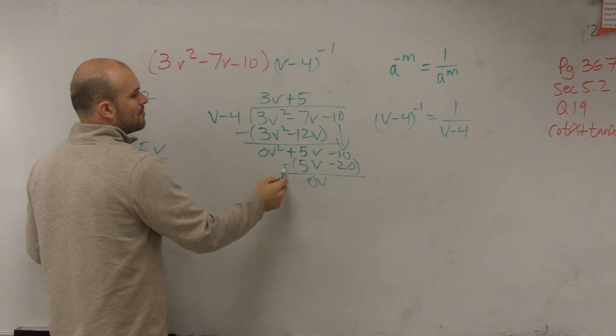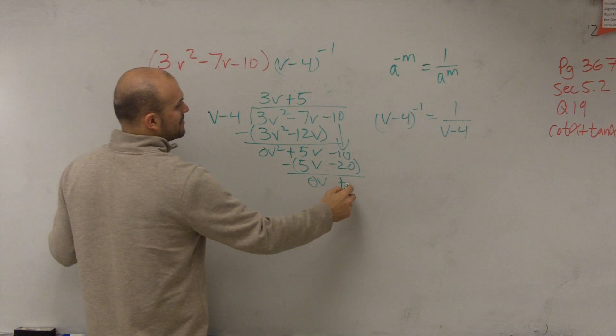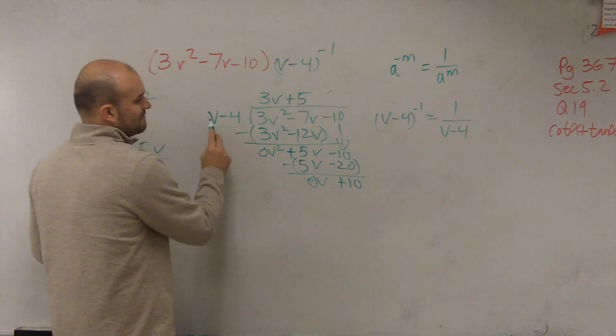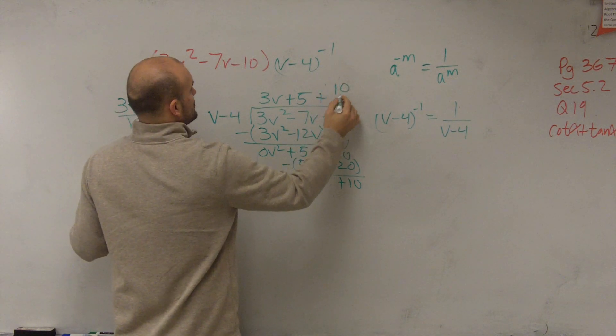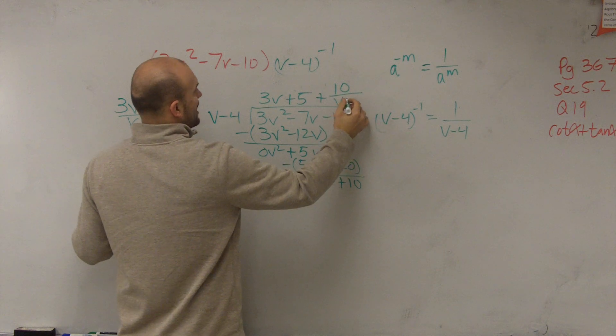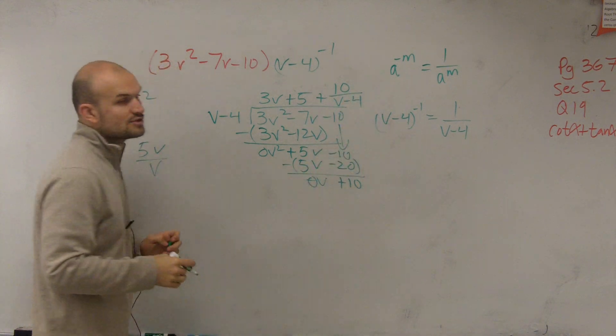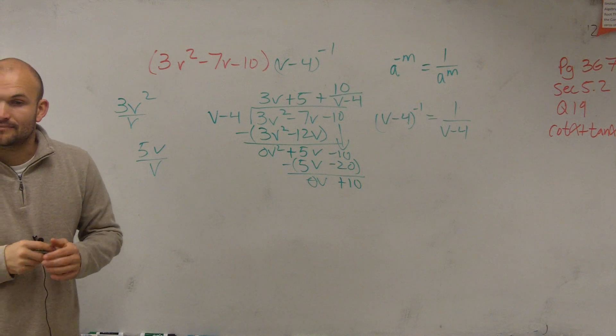5v minus 5v is 0v. Negative 10 minus a negative 20 is going to be now a positive 10. V does not divide into 10, so therefore that's going to be our remainder, which is positive 10 divided by our divisor. So that is how you're going to write in your final answer.